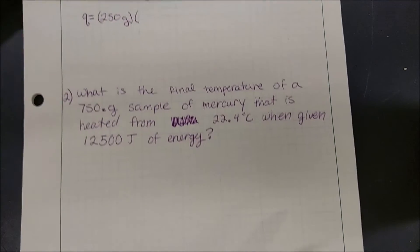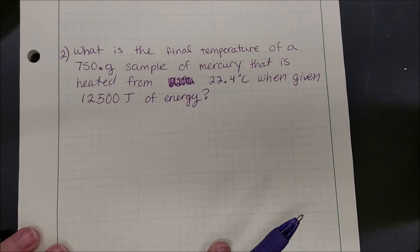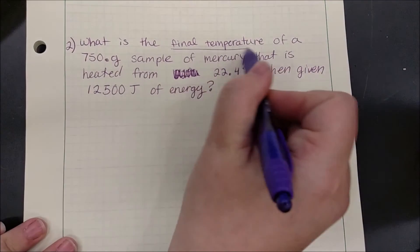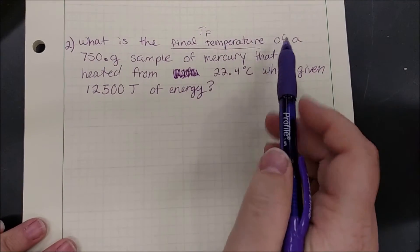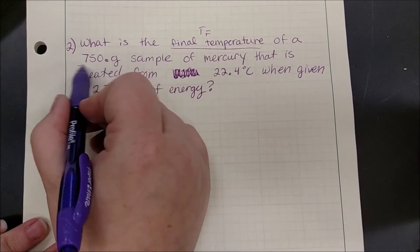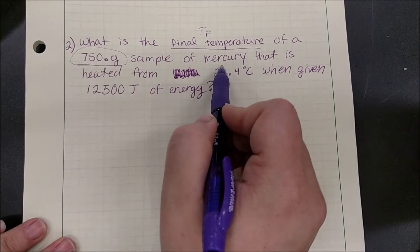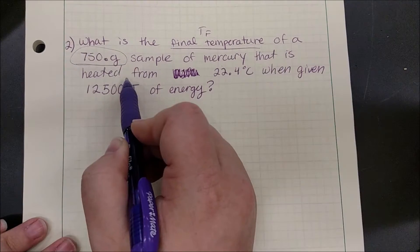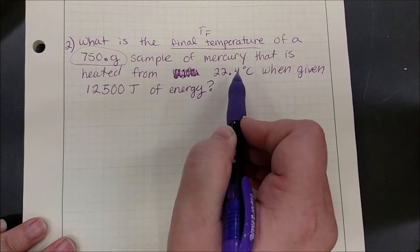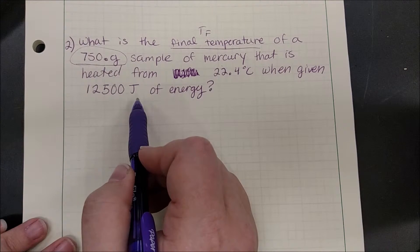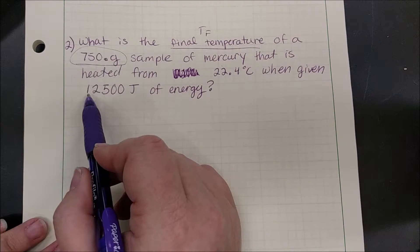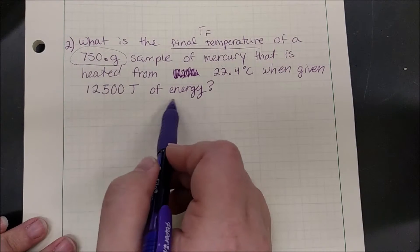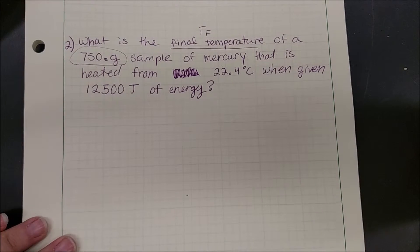We have a second question. What is the final temperature of a 750 gram sample of mercury that is heated from 22.4 degrees Celsius when 12,500 joules of energy are added?